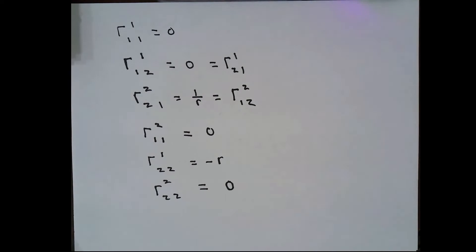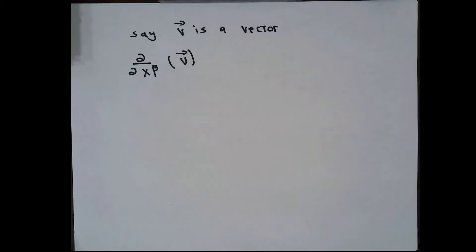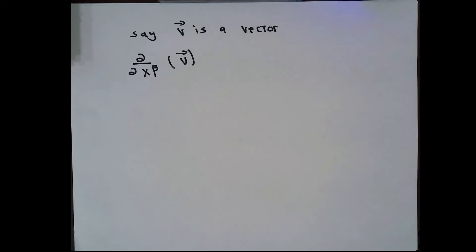This summarizes everything we've figured out. Notice that gamma 1 1 2 and gamma 1 2 1 are both equal to zero, as they should be. Also, gamma 2 2 1 and gamma 2 1 2 are both equal to 1 over r, as they should be, because we're working in a coordinate basis, which guarantees that the Christoffel symbols are symmetric in the lower two indexes.